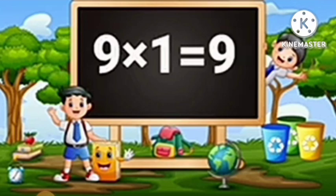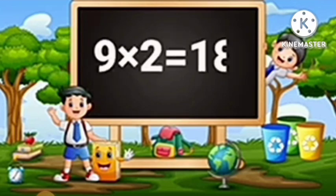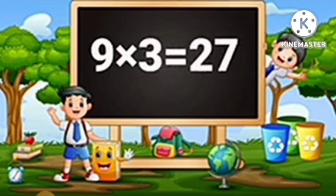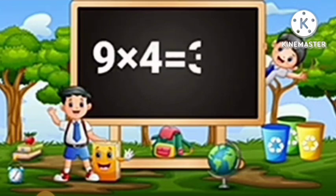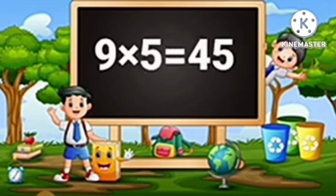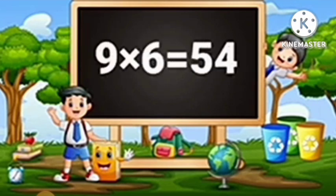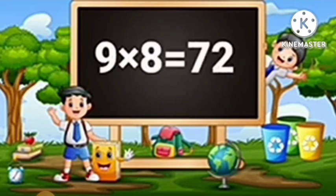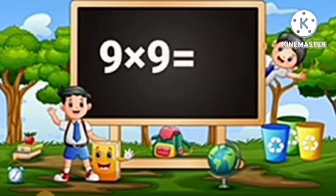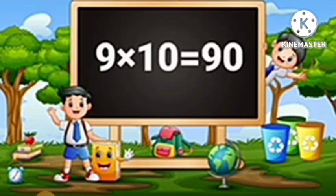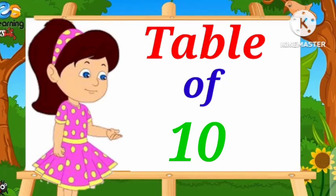Table of Nine. Nine-One's are Nine. Nine-Two's are Eighteen. Nine-Three's are Twenty-Seven. Nine-Four's are Thirty-Six. Nine-Five's are Forty-Five. Nine-Six's are Fifty-Four. Nine-Seven's are Sixty-Three. Nine-Eight's are Seventy-Two. Nine-Nine's are Eighty-One. Nine-Ten's are Ninety.